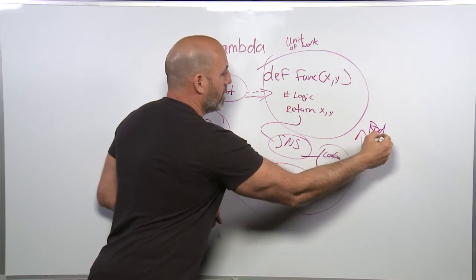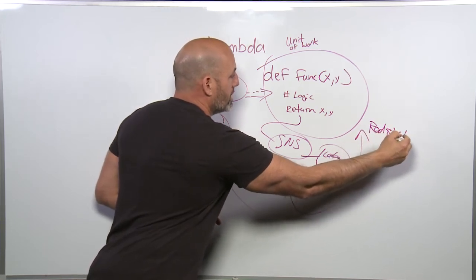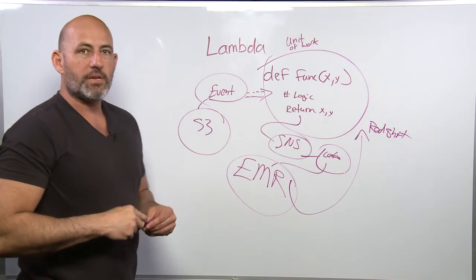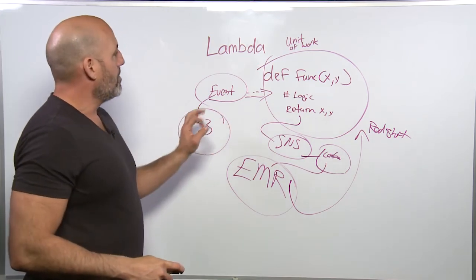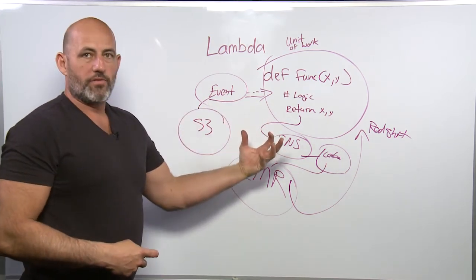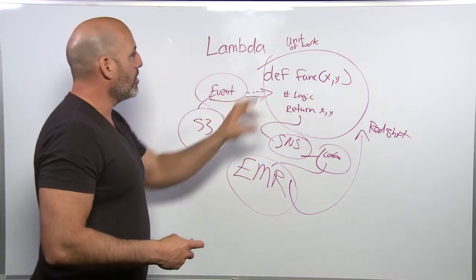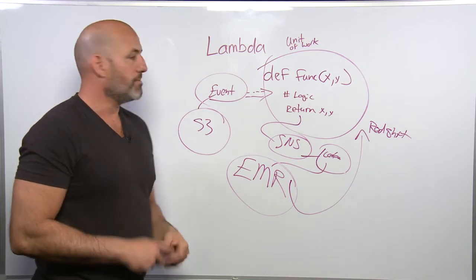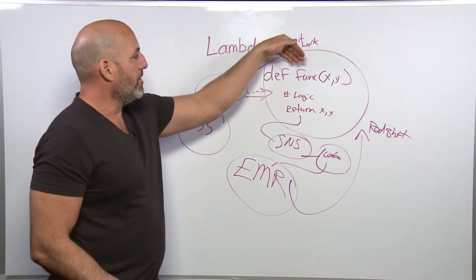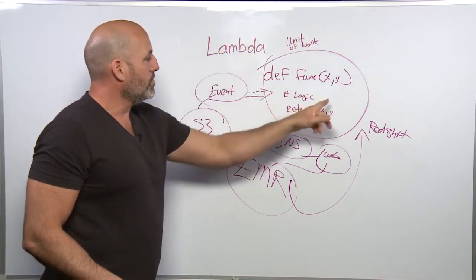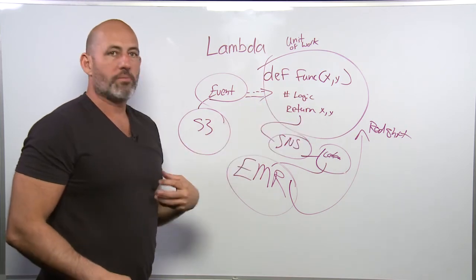So really the takeaway here is that a Lambda is almost like the language of highly scalable serverless processing, and you can fit Lambdas all over the AWS ecosystem and just have the idea of something comes in, you do a processing, and then you return back that result.